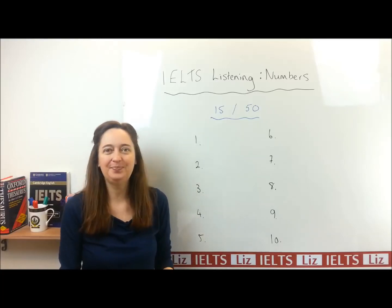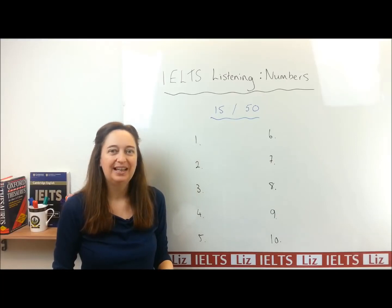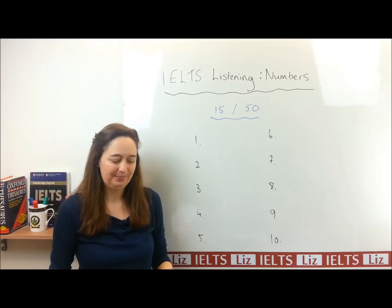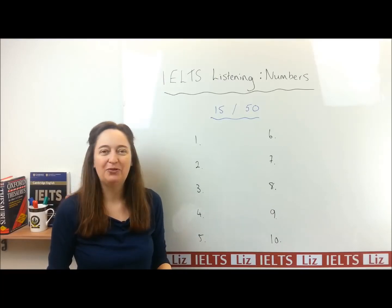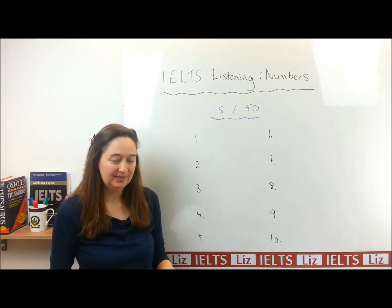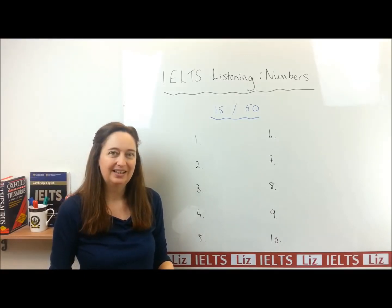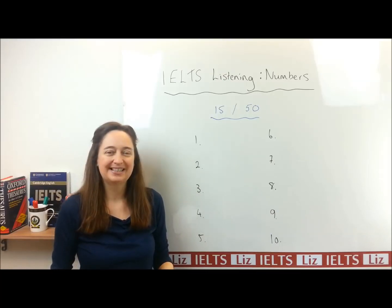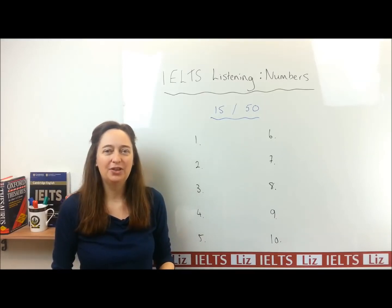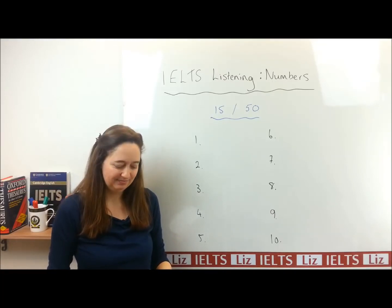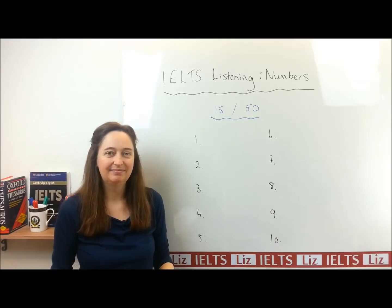Right, let's start. Number one: sixty. Number two: fifteen. Number three: fourteen. Number four: seventy. Number five: nineteen. Number six: eighty. Number seven: thirty. Number eight: fifty. Number nine: sixteen. And number ten: eighteen. That's all of them.